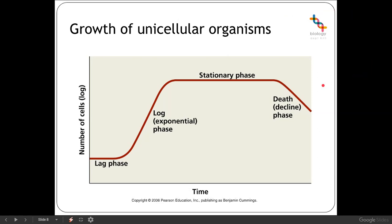We then come into the death or decline phase, caused by lack of nutrient substrate or accumulation of toxic metabolites. Some of the secondary metabolites produced in the stationary phase may prove toxic to the microorganism when produced in significant quantities. As they accumulate, cells start dying, and eventually the number of cells dying exceeds the number of new cells being produced. The population starts to decline and may disappear entirely, or a few individuals may survive as resistant spores.